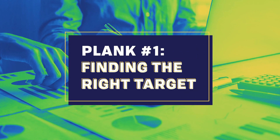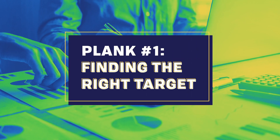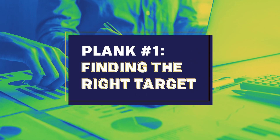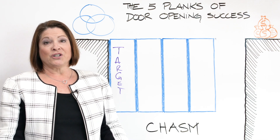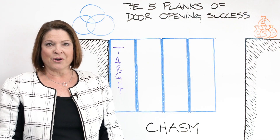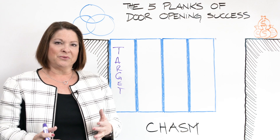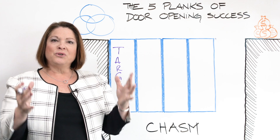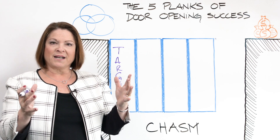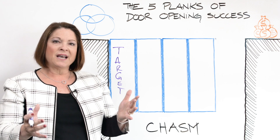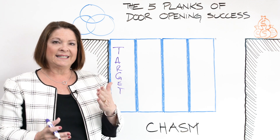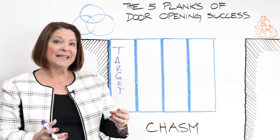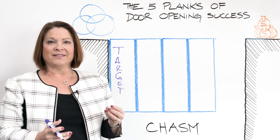Plank number one is target. Here's the most common error: targeting too wide. If you're targeting everyone, you're actually targeting no one. What can you do to reduce the universe of prospects so that you can focus only on those who are more likely to say yes sooner to the meeting and yes sooner to the sale?